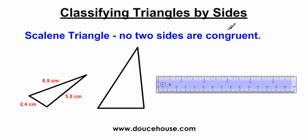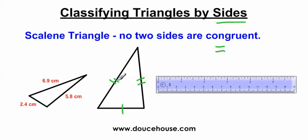Moving on to classifying triangles by sides, we have the scalene triangle. No two sides are congruent — congruent means equal. I measured these sides earlier using a ruler, and none of the sides are the same length, so this is an example of a scalene triangle. Often they will not put the measurements on there; instead they'll use tick marks. Tick marks indicate the lengths of sides. One tick mark, two tick marks, three tick marks — since all sides have a different number of tick marks, those sides are not congruent, making this a scalene triangle.